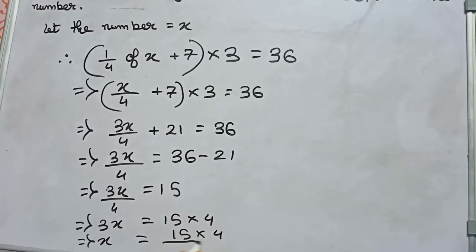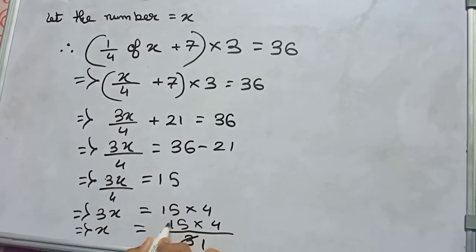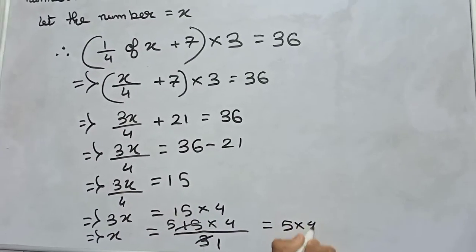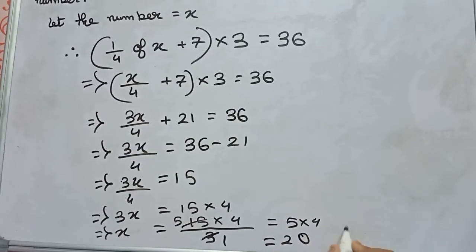Or you can write x equals 15 into 4 by 3. We cut 3 and 15, so it becomes 5 into 4, that is 20.